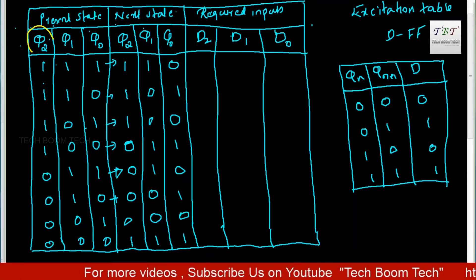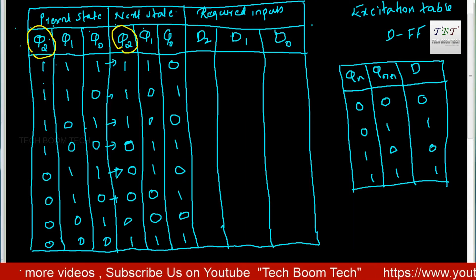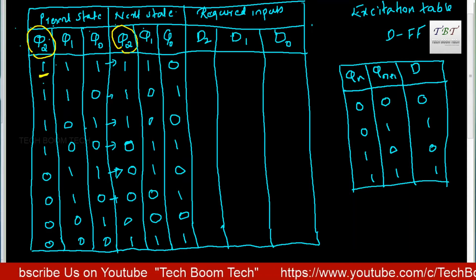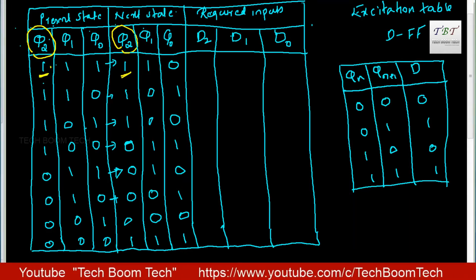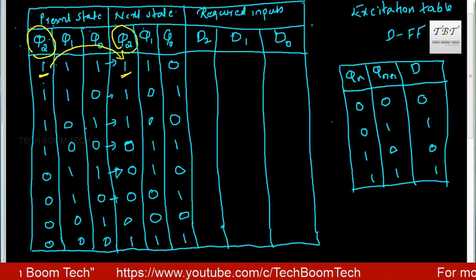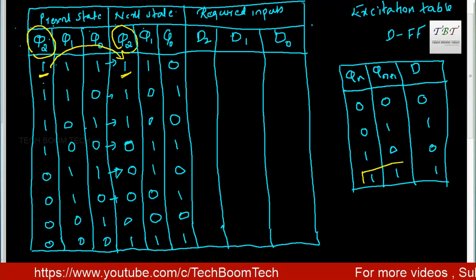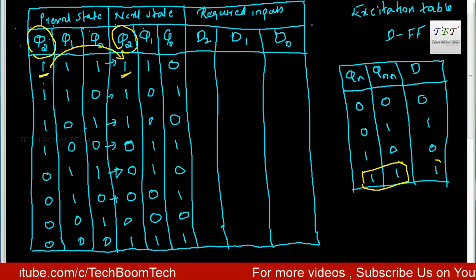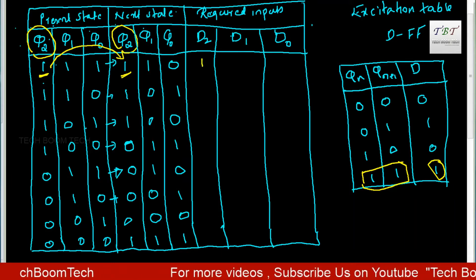In the present state of Q2 and in the next state of Q2, we need to identify the transition. Here, a 1 to 1 transition occurs. For a 1 to 1 transition in the excitation table, D should be 1. So here I am entering 1.